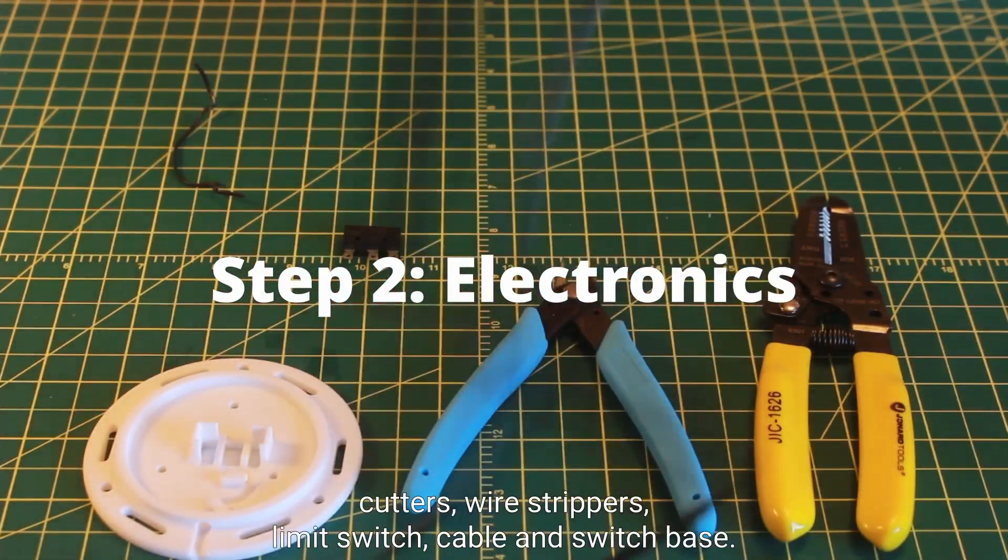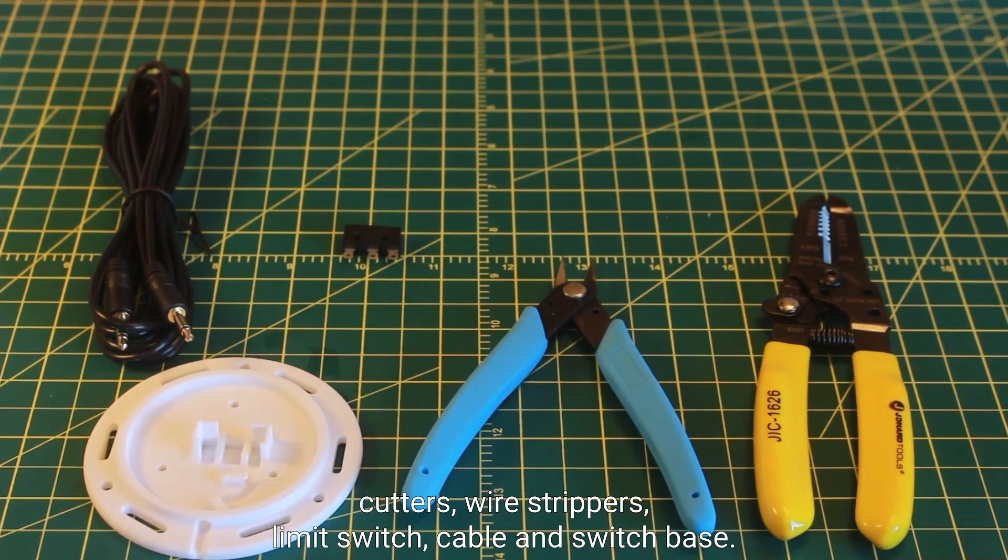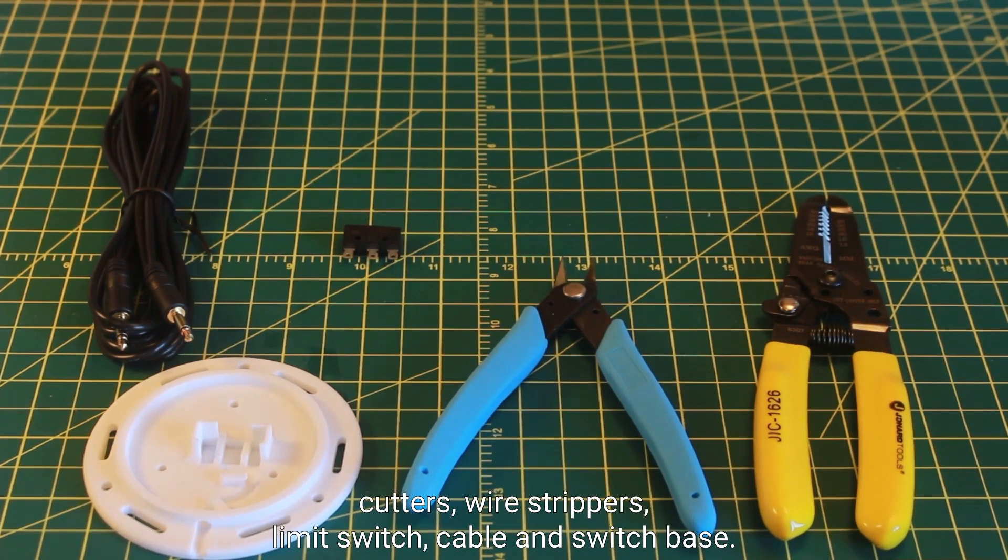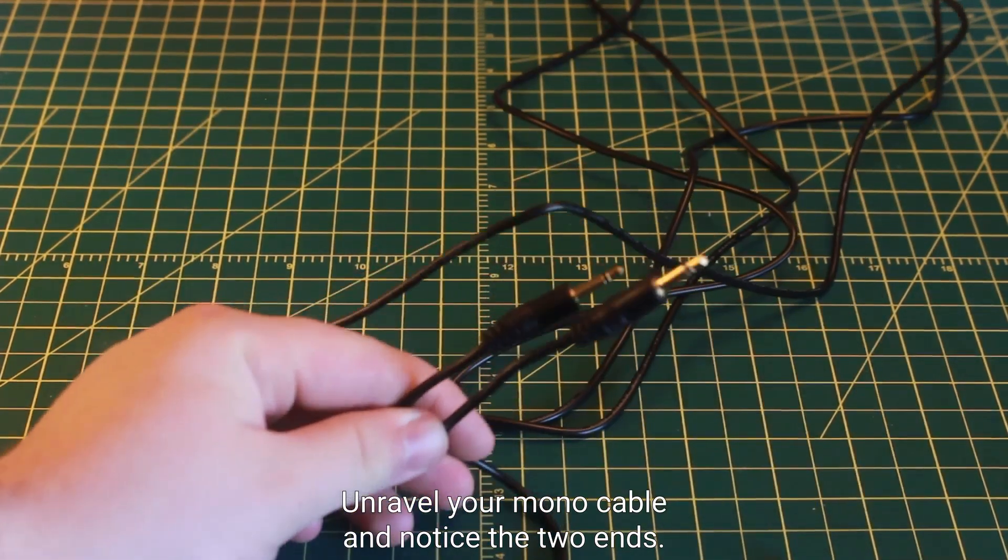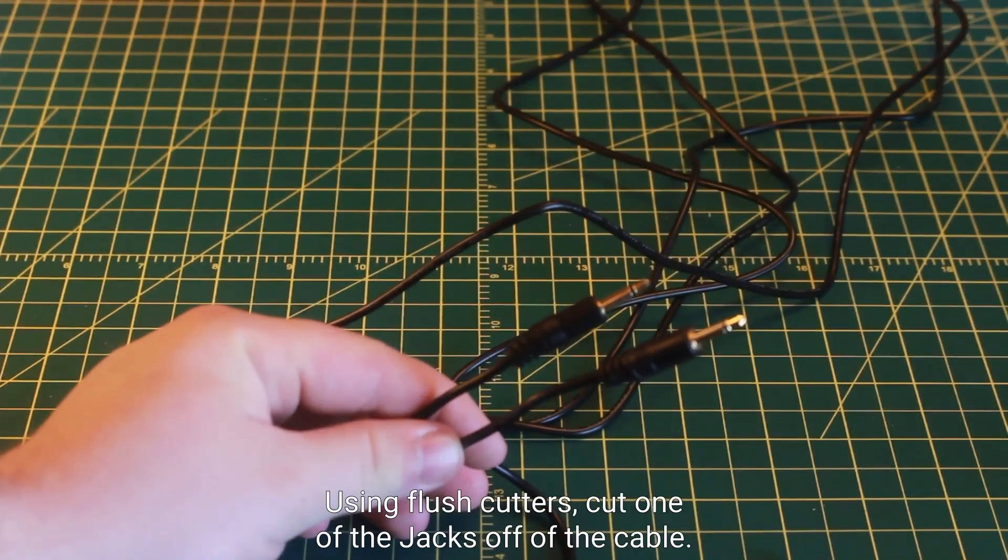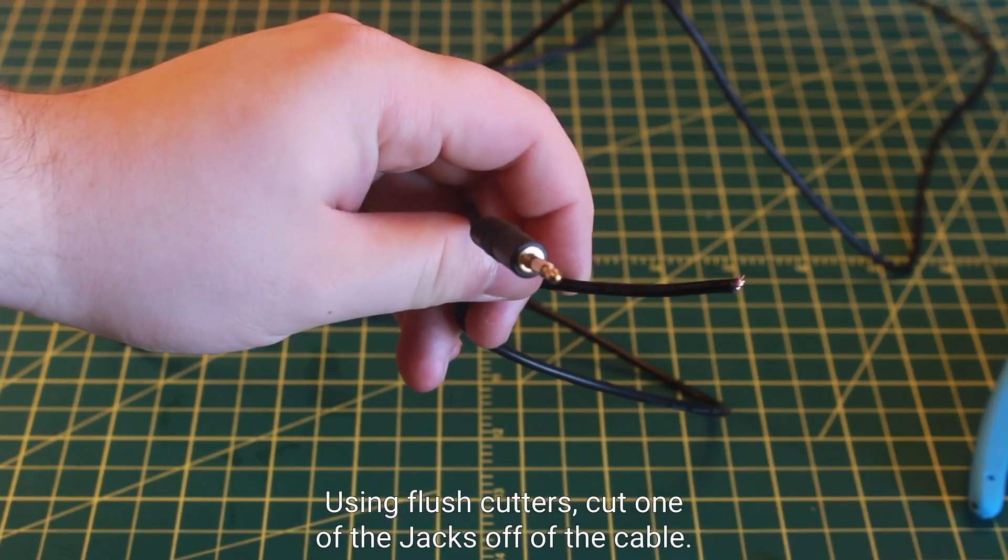For this step you'll need your flush cutters, wire strippers, limit switch, cable, and switch base. Unravel your mono cable and notice the two ends. Using flush cutters, cut one of the jacks off of the cable.